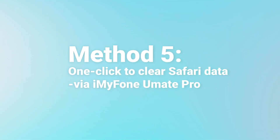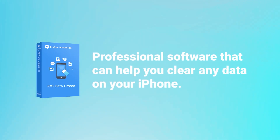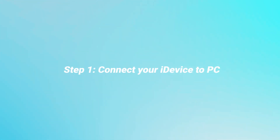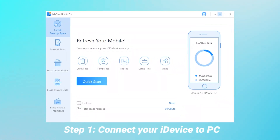Method number five: one click to clear Safari data via iMyPhone Umate Pro. iMyPhone Umate Pro is a professional software that can help you clear any data on your iPhone like browsing history, apps, photos, etc. Step one: connect your iDevice to PC. Download and install iMyPhone Umate Pro on your PC first and connect your device.